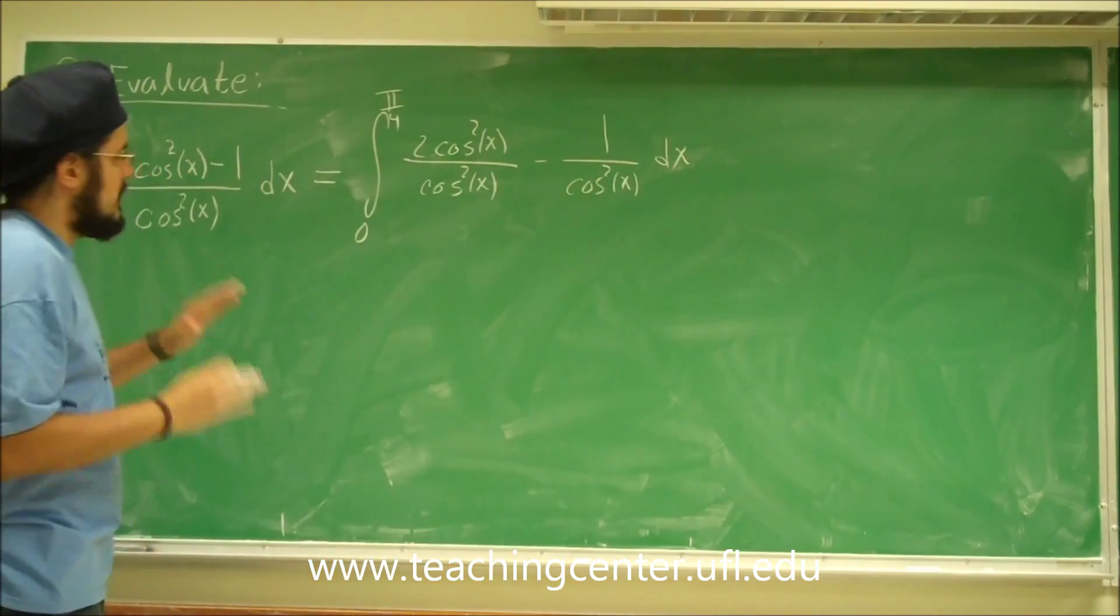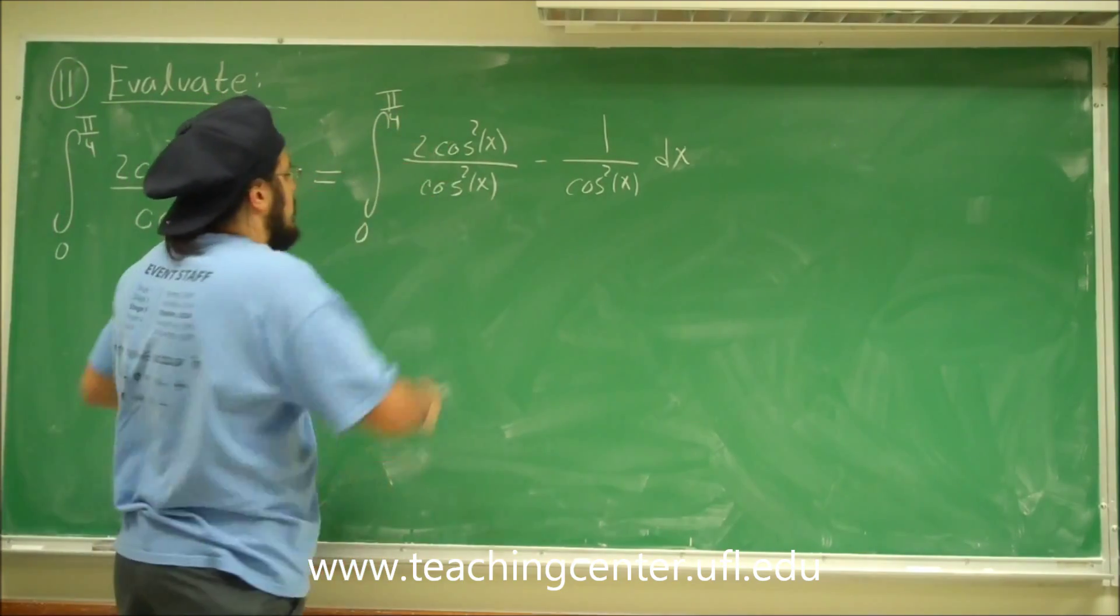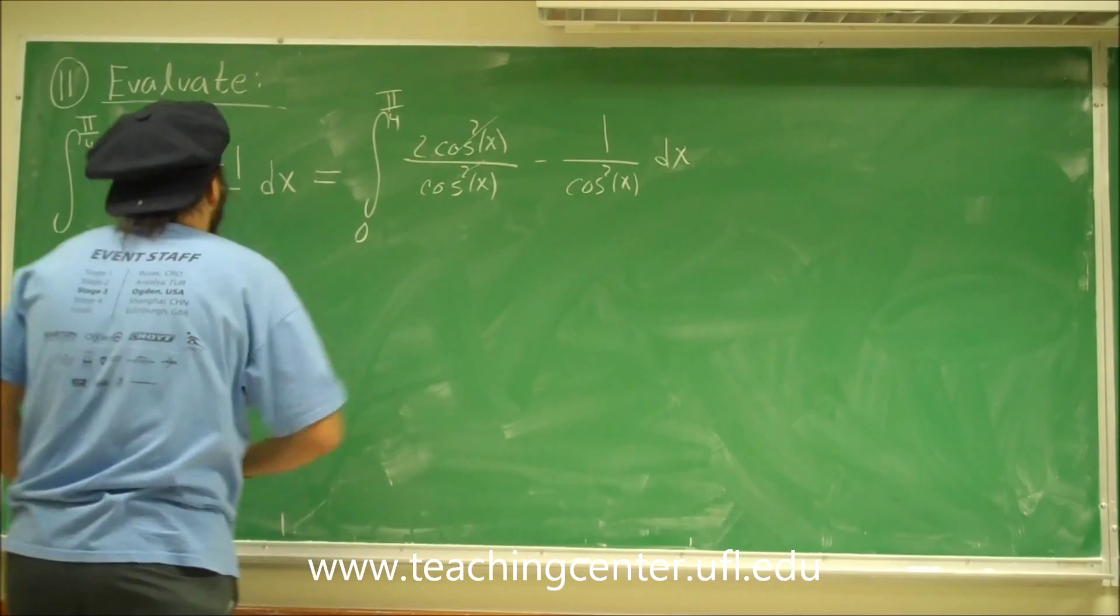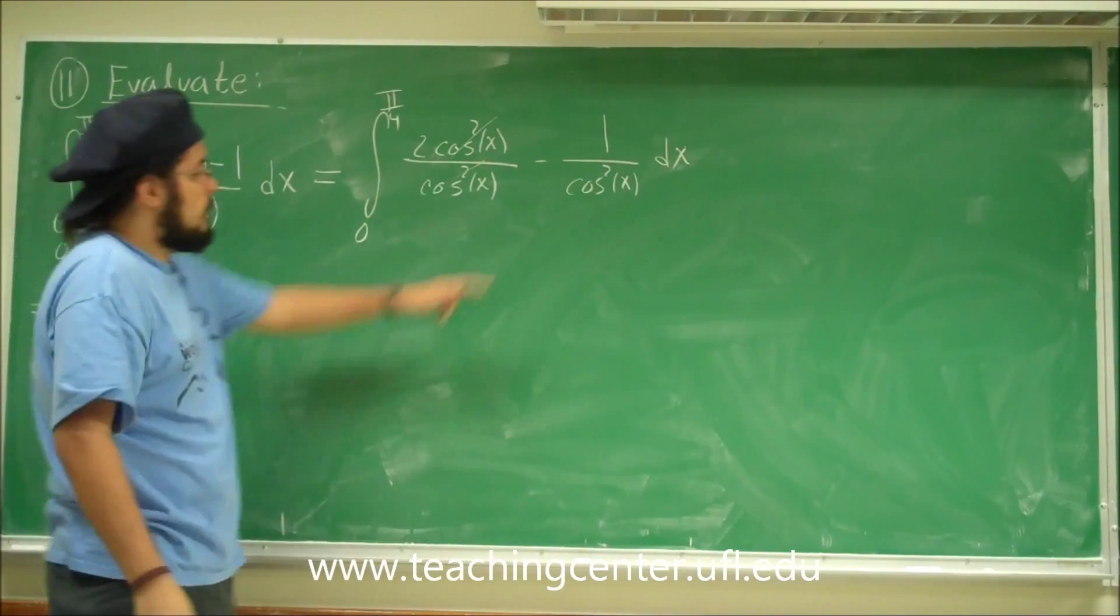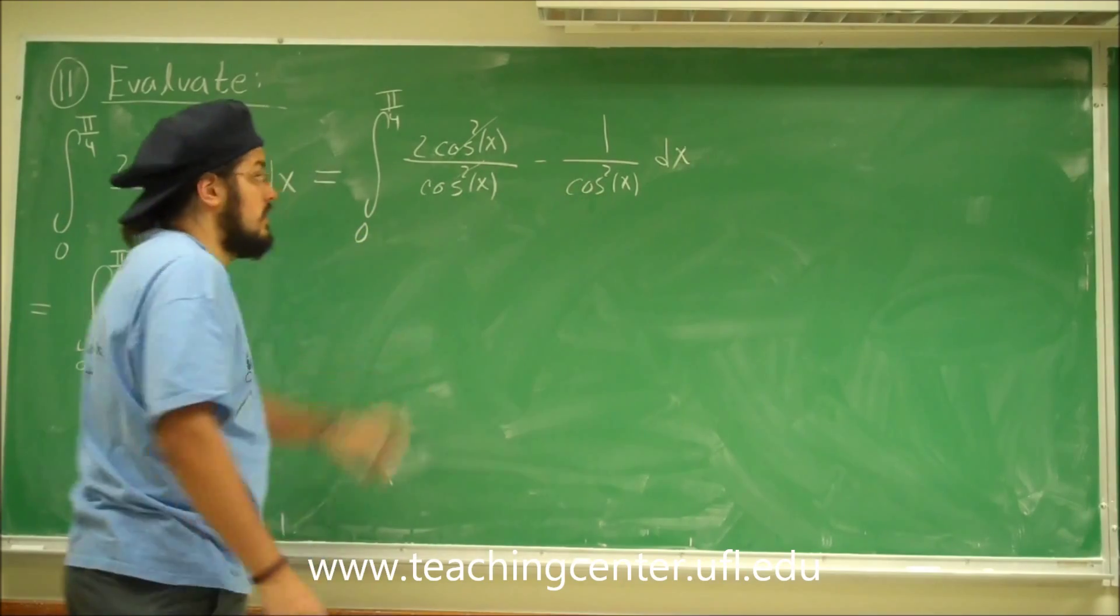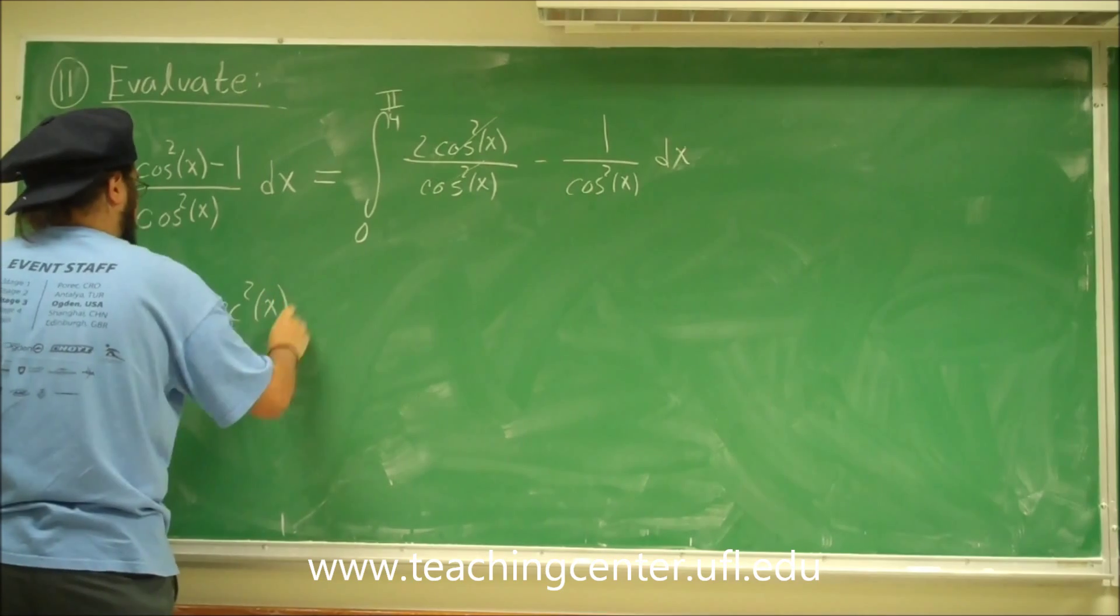Okay, so by doing this, it helps us out a lot. Cosine squared divided by cosine squared, you can go ahead and cancel those out. So we're left with the integral from 0 to pi over 4 of 2 minus 1 divided by cosine squared is secant squared. So minus secant squared x dx.